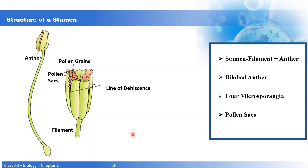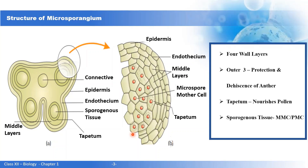Now let's study the structure of microsporangia in detail. The microsporangia has four walls. The outer three walls serve protection and aid in the dehiscence of the anther. The outermost wall is the epidermis, inner to it is the endothecium, then the middle layers, and the innermost layer is the tapetum. The main function of the outer three walls is protection, while the function of tapetum is nourishment of the developing pollen grains.